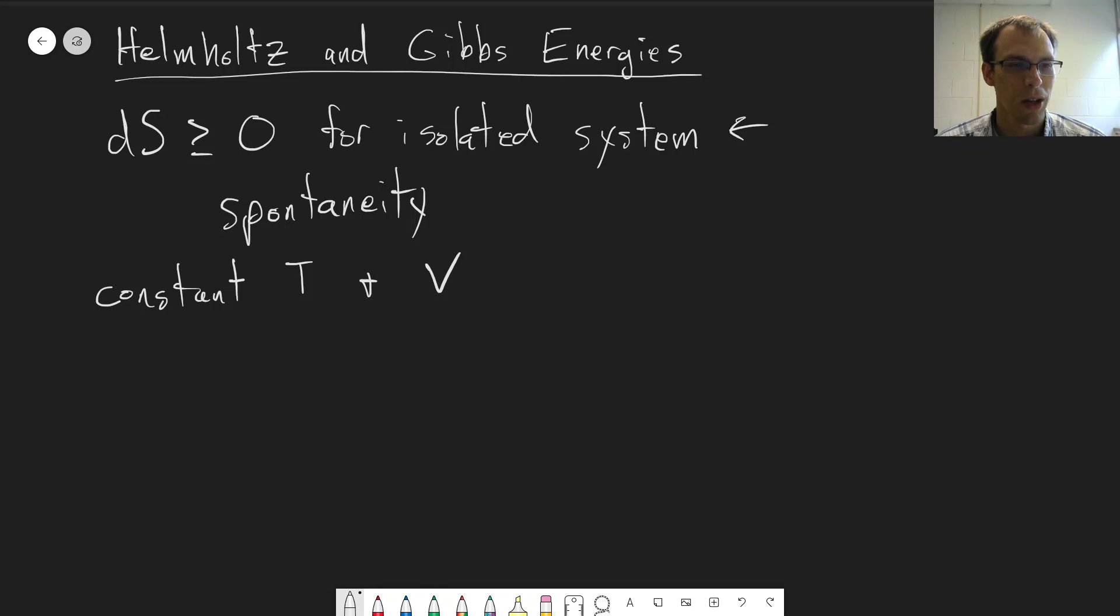And so we can go ahead and write out the first law of thermodynamics for this, that dU is equal to dq plus dw, just by definition. But this term goes to zero because dV equals zero, because there's no change in the volume. So we can say that dU is equal to dq under these conditions.